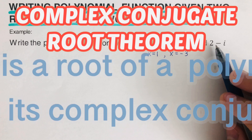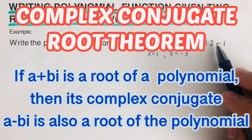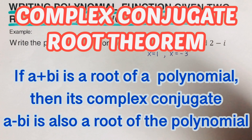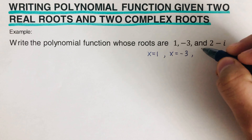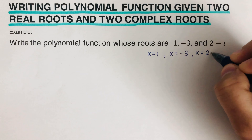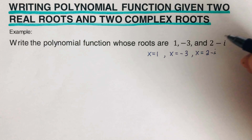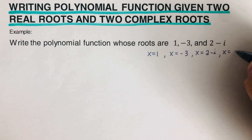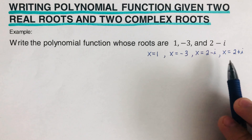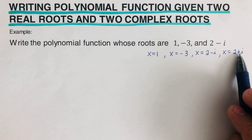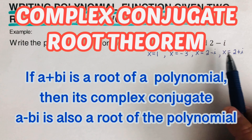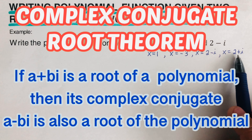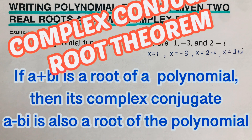For the complex root, we remember the complex conjugate root theorem, which states that if a + bi is a root of a polynomial function, then its complex conjugate a - bi is also a root. So if 2 - i is a root, its conjugate 2 + i is also a root. We just switch the sign of the bi part, so our four roots are x = 1, x = -3, x = 2-i, and x = 2+i.